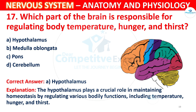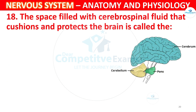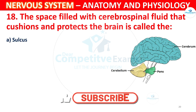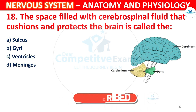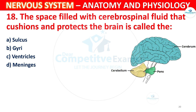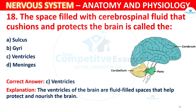Question 18: The space filled with cerebrospinal fluid that cushions and protects the brain is called what? Options: A) Sulcus, B) Gyri, C) Ventricles, D) Meninges. The correct answer is C, Ventricles. The ventricles of the brain are fluid-filled spaces that help protect and nourish the brain.